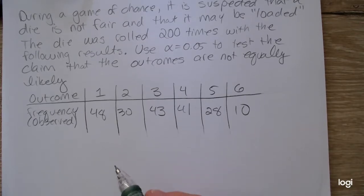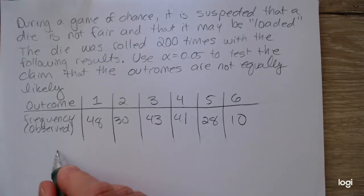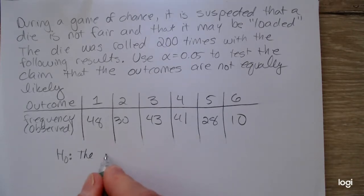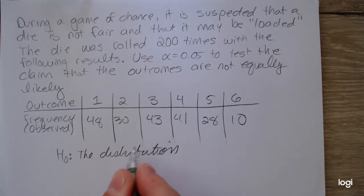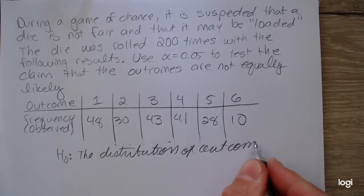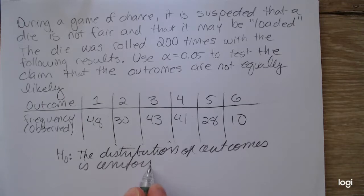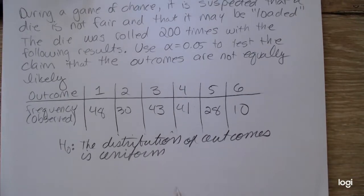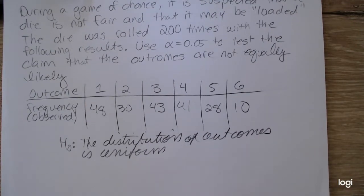So to set up the null and the alternative, the null statement is that the distribution of outcomes is uniform. In other words, we expect each outcome to be equally likely.